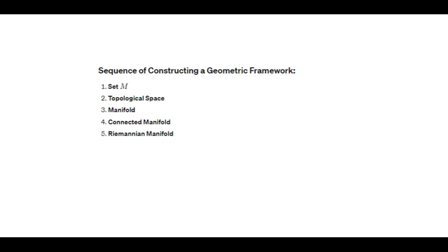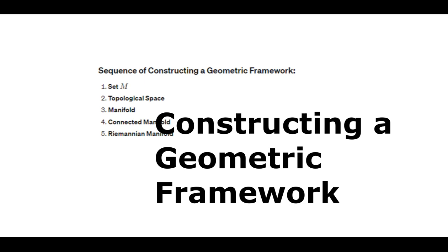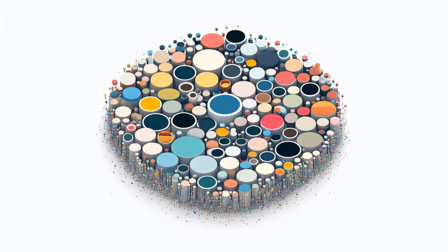Constructing a Geometric Framework. Set. The most basic concept in constructing a geometric framework is a set, which is a collection of distinct objects considered as an entity. This is the building block for more complex structures.